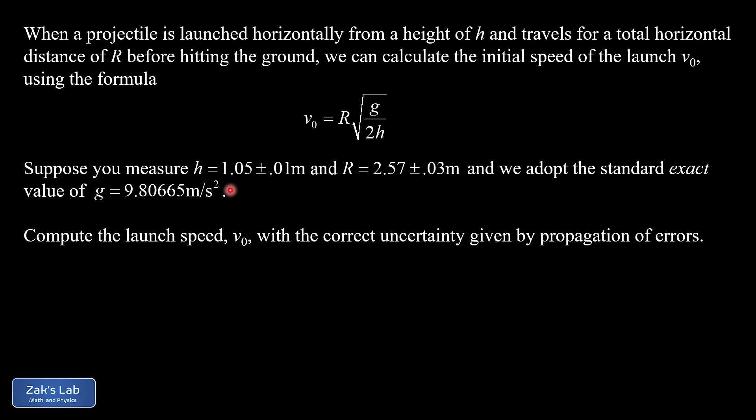So then the problem here is that we want to calculate the launch speed of the projectile, in other words, find v₀, but then put the appropriate uncertainty on it by using propagation of errors.